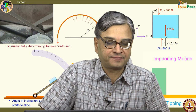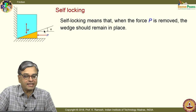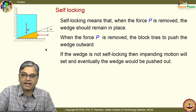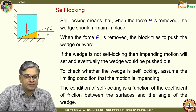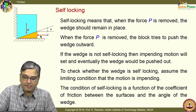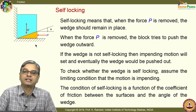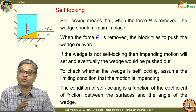Let us continue our discussion on friction. In the last class, I introduced the concept of self-locking. The idea is you have a weight lifted by a wedge. The actual angle is about 3 to 4 degrees — it is shown as 30 degrees for easy visualization. The idea is, when I remove the force P, the block should remain at the place where it was lifted initially. Self-locking is a desirable property.